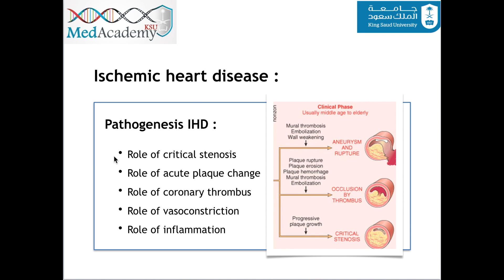Pathogenesis — what I mean by pathogenesis is basically the starting point of getting ischemic heart disease. We have critical stenosis, acute plaque change, coronary thrombus, vasoconstriction, and inflammation.